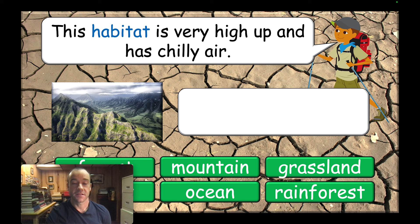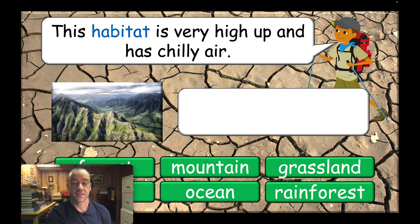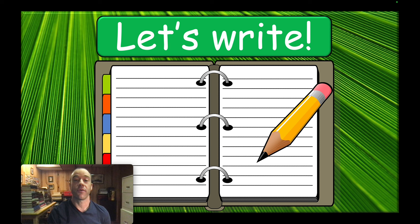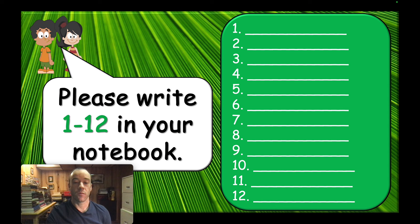Rinse and repeat until all the slides are done and a decent amount of students have participated. That's the end of this part of the lesson. Let's go on to the writing part. This writing game is pretty basic — first have them write 1 to 12 in their notebook. I like to have a slide like this just so I can go around and make sure they're actually doing it.